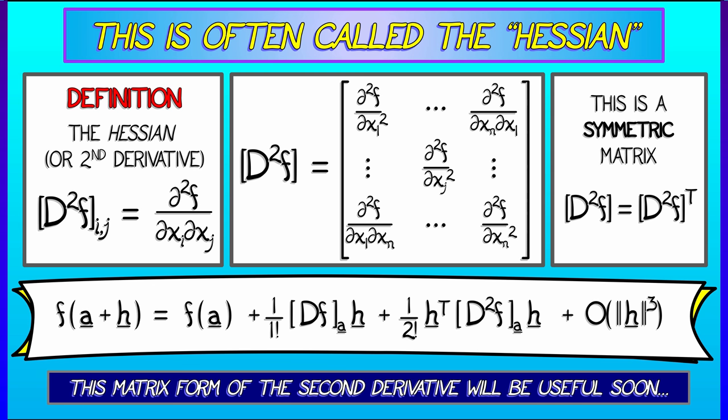If I look at ij, it's the same as ji, and packing all of these second derivatives into this square matrix is going to wind up being really useful to us, especially in analyzing second order terms in a Taylor expansion.